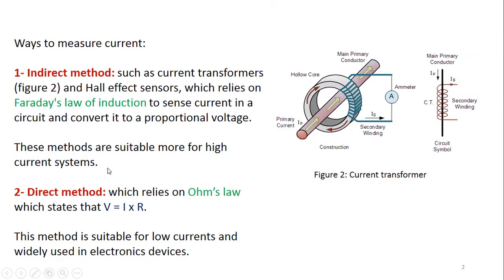How can we actually measure it? Well, we have indirect methods and we have direct method. The indirect method relies on Faraday's law of induction, which means that whenever this current flows in the wire, it's gonna be an induced voltage in something like this, which is called the current transformer.